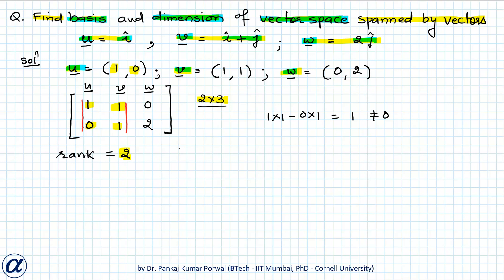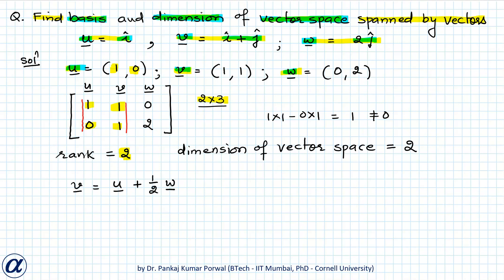So the dimension of the vector space will be 2. If we look carefully, we can write vector v as u plus w/2, so vector v depends linearly on vectors u and w. Therefore, vectors u and w are the two linearly independent vectors, and the basis for our vector space will consist of vectors u and w.